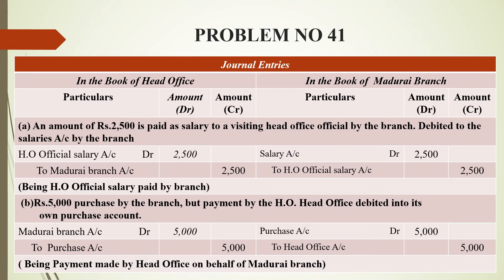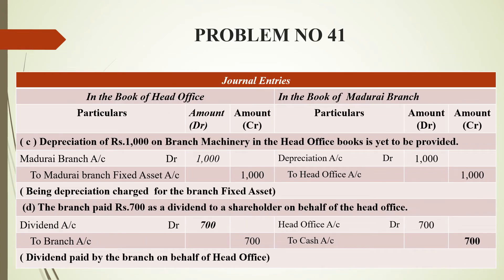The third entry: depreciation of rupees 1,000 on branch machinery is yet to be provided in the head office book. The asset is maintained by the head office. The head office entry is: Madurai Branch Account debit to Madurai Branch Fixed Asset Account, for rupees 1,000. On the branch side, since the asset is maintained by head office, the entry is: Depreciation Account debit to Head Office Account.